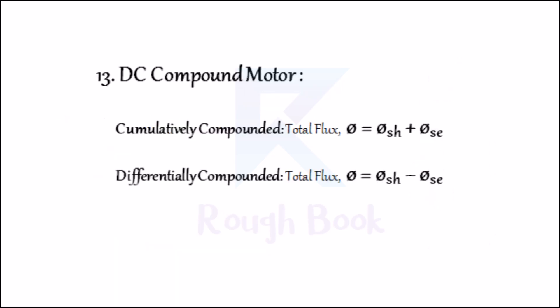Number thirteen: DC compound motor. A DC compound motor has a shunt field winding and a series field winding. If the fluxes produced by both windings are in the same direction and are additive, the motor is said to be cumulatively compounded. If the two fluxes oppose each other, the motor is said to be differentially compounded. For cumulatively compounded, total flux φ = φSH + φSE. For differentially compounded, total flux φ = φSH − φSE.